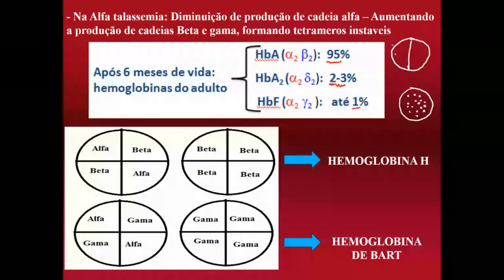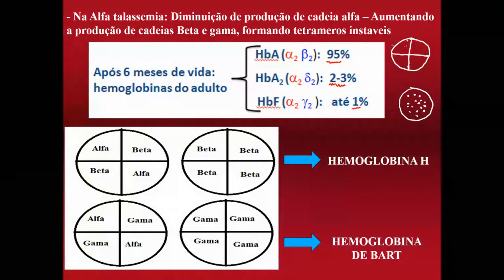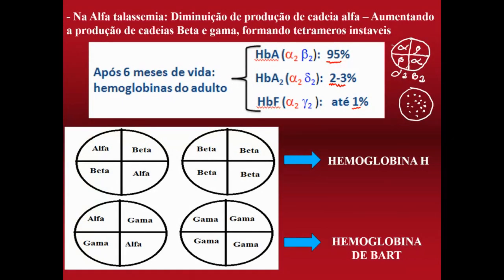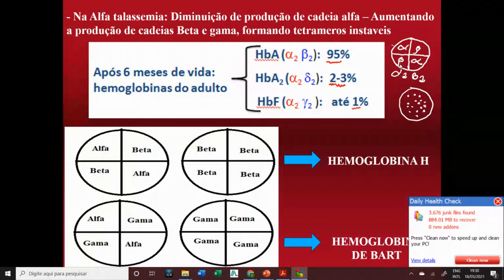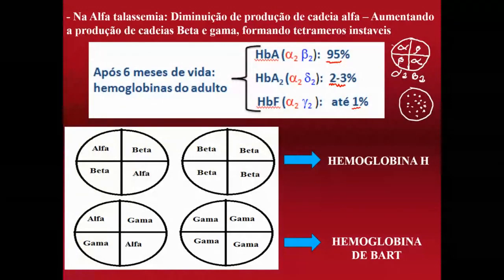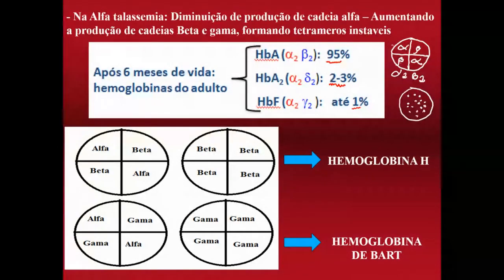A hemoglobina é um tetrâmero — dividimos a molécula em quatro. A hemoglobina A é composta por duas cadeias alfa e duas cadeias beta (alfa2-beta2). Quando há beta-talassemia, apenas a hemoglobina A é alterada, pois é a única que possui cadeia beta. Como 95% da nossa hemoglobina é A, a beta-talassemia afeta majoritariamente essa fração.